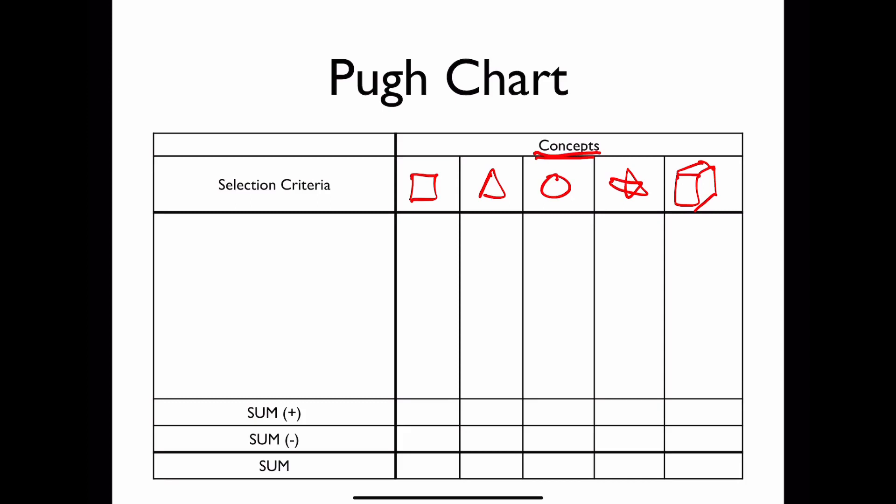Now, across all these concepts, we want one of these to be our datum. So this object right here as our square is going to be our datum, which means all of our other concepts, the triangle, the circle, the star, and the box are getting compared against the datum. And the manner in which we compare them is through our criteria over here. And so for our criteria, maybe something we compare against is area, or another one might be cost in terms of making the object. Another one might be in terms of usability for whatever our concepts are.